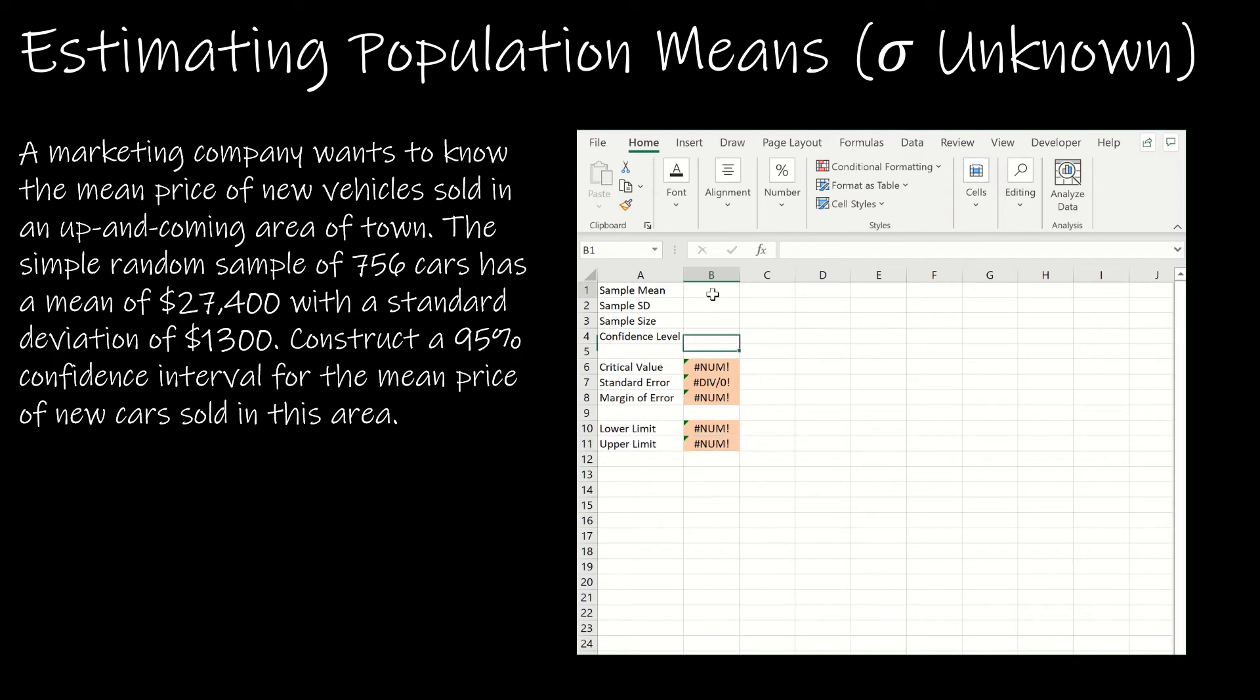Let's take a look at how this works for the question we just did by hand. The sample mean was $27,400, the sample standard deviation was 1300, the sample size was 756 cars, and we were taking a 95% confidence interval, so 0.95. Notice the critical value 1.963111, which is the same thing we found previously. The standard error gives us the margin of error of $92.82. And then here is our interval: lower limit is $27,307, upper limit $27,493.